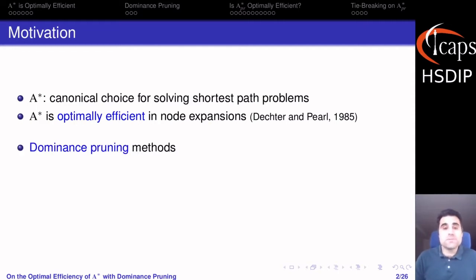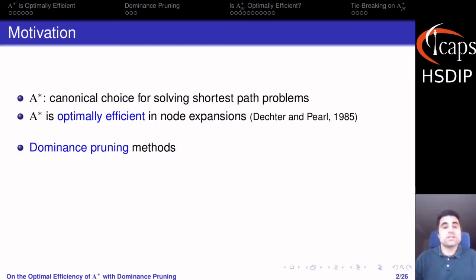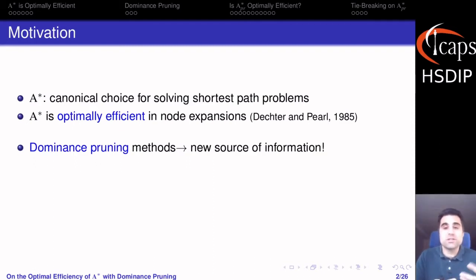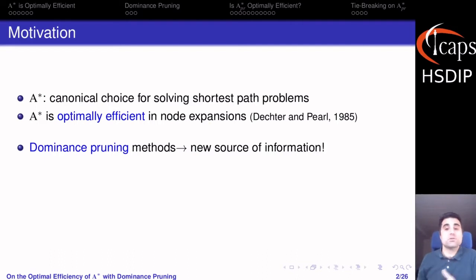The motivation for this paper is that I have been working with dominance pruning methods in the context of cost-optimal planning. After one of the talks, Rina Dechter herself came to me and asked me how dominance pruning is achieving a lower amount of expansions than A-star, if we know that A-star is optimally efficient. Of course the answer is because dominance pruning is exploiting a dominance relation, which is a new source of information, and that means that under this new source of information the previous results of optimal efficiency of A-star are no longer valid.